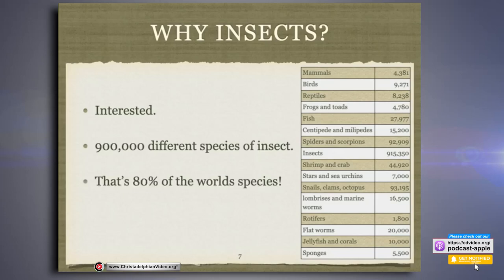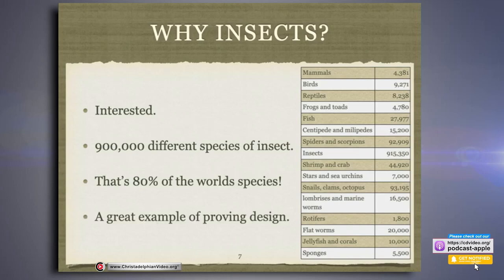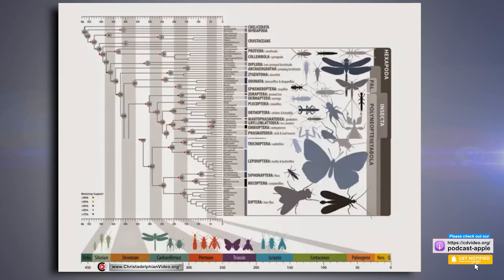It's a great example of proving design when we see all the different types and what they are capable of — and that's only what has been discovered so far. I'm sure there are many tens of thousands more not yet discovered. Evolution would make us believe that these 915,000 different insects all started as one thing and then changed over time.